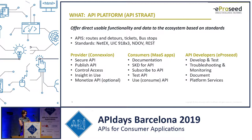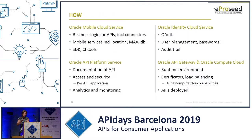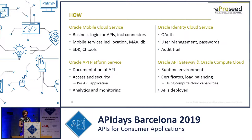The API platform was realized to support mobility as a service and some other APIs, together with the bus company. It has three major parts. For the business logic behind the different APIs, we used Oracle Mobile Cloud Service. It has connectors so you can connect to an XML source, a SOAP service, or a REST service. It also has a number of location-based services — geocoding, for example: you can give it coordinates with latitude and longitude, do geofencing, and get all the bus stops within a certain area. For security, we used the Oracle Identity Cloud Service with OAuth options and user management.